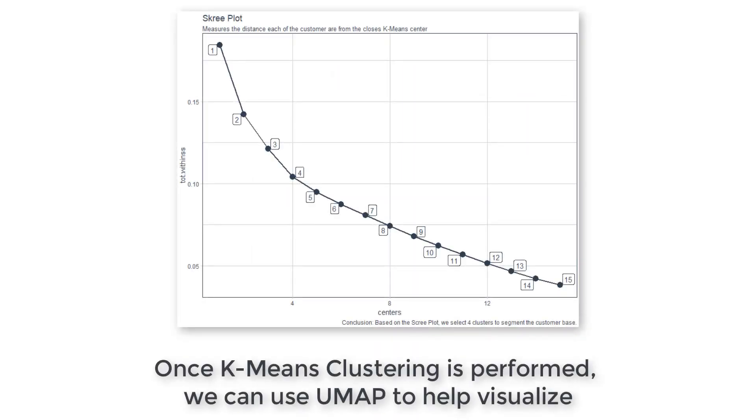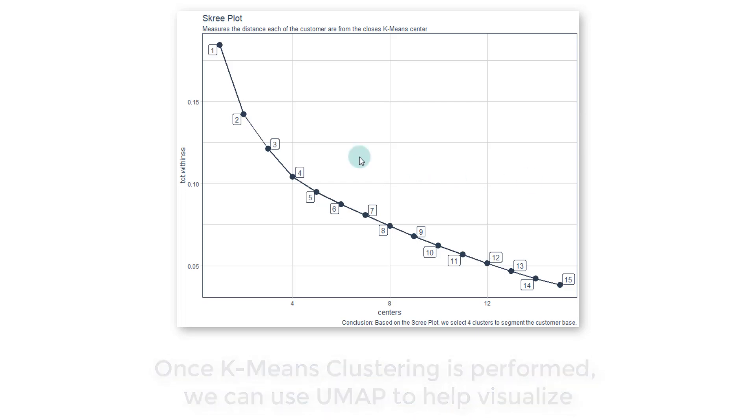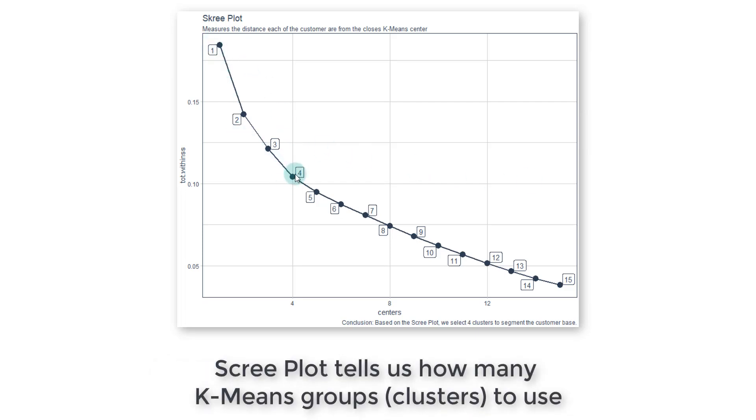Okay, so in this section, now that we know what the k-means, the number of centers that we're going to use from the scree plot. So in this last section we came up with the scree plot, we saw that four centers is the one that we want to go with.